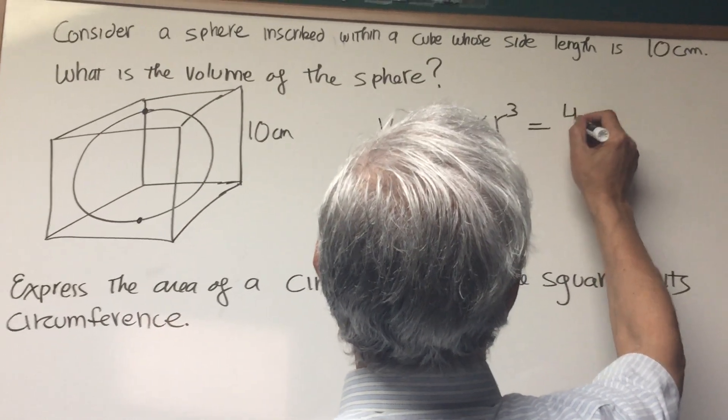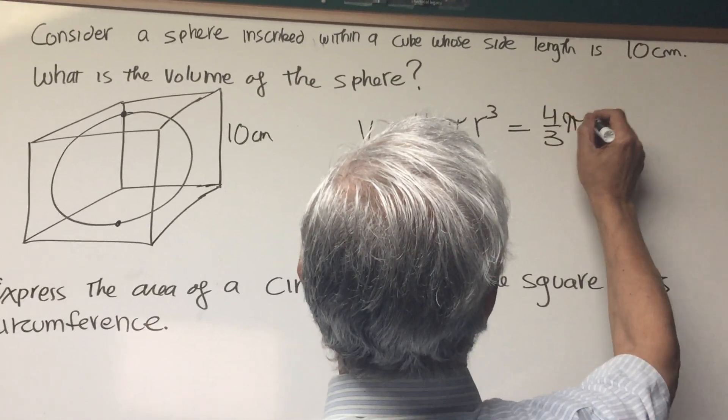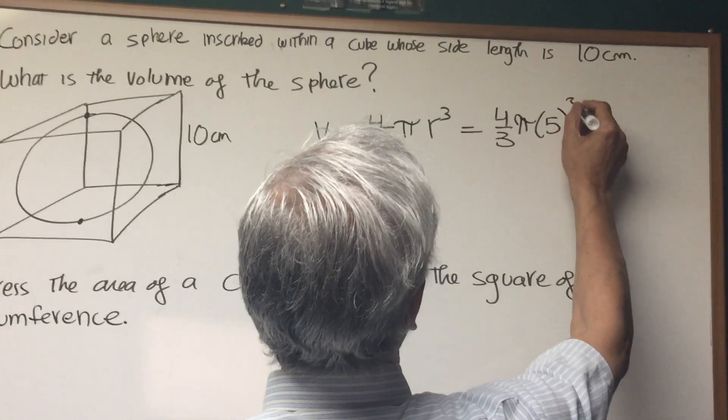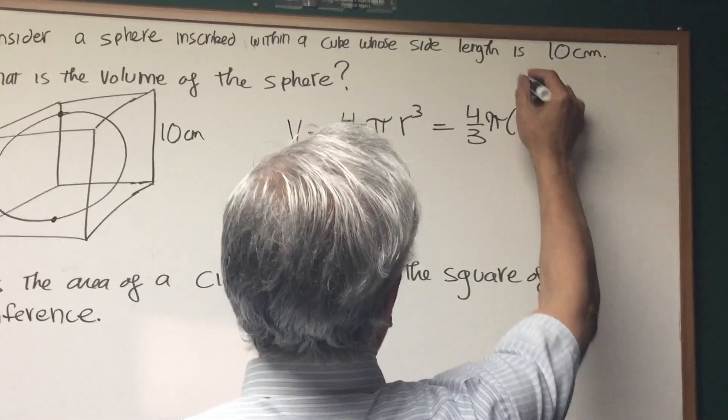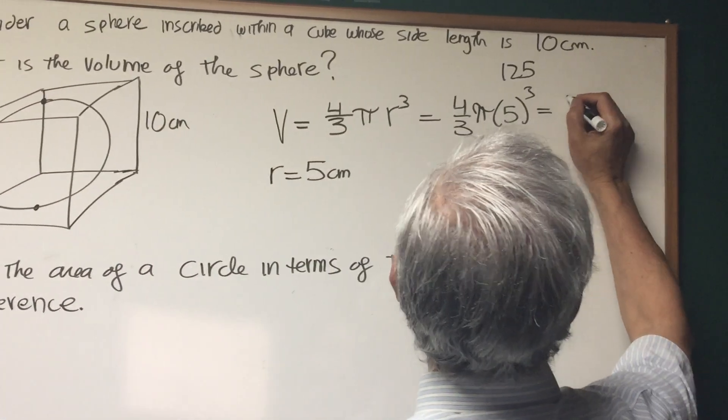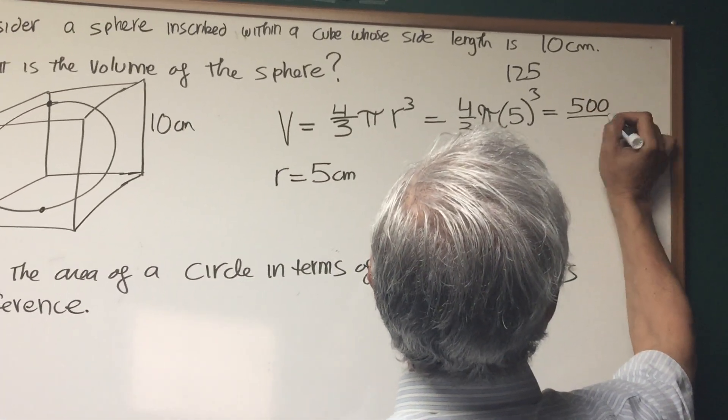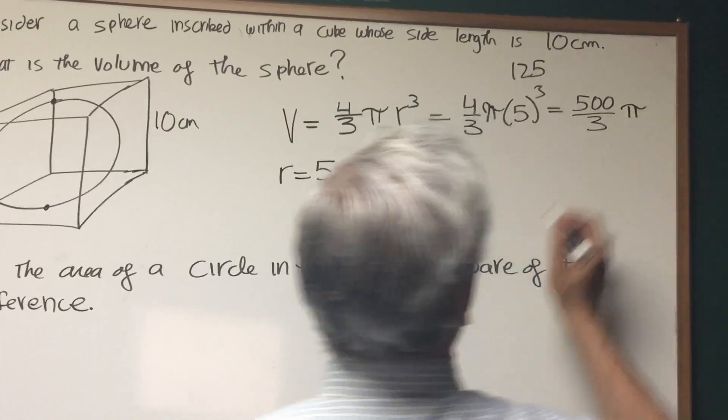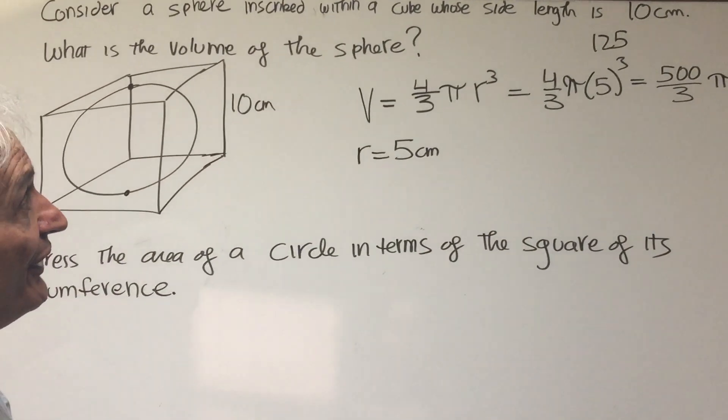So the volume is going to be four-thirds times pi times 5 cubed, which is 125. So four times 125 is 500. So it's going to be 500 over 3 times pi. There's the volume of the sphere.